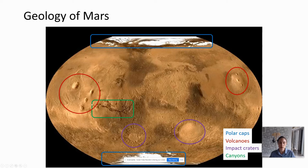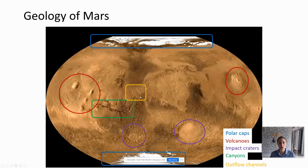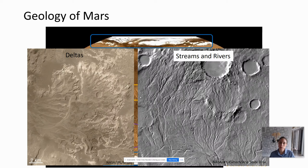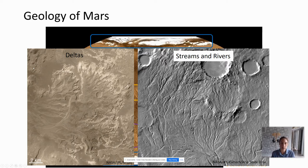We also see an extensive canyon system called Valles Marineris, about 3,000 miles across, and outflow channels formed from liquid water, some up to about 1,000 miles in length. And if we look closely at the most ancient terrains on Mars, we see geomorphological features indicative of liquid water, including fossilized deltas from rivers flowing into lakes on crater floors — such as this beautiful delta in Eberswalde Crater — as well as systems of streams and rivers.